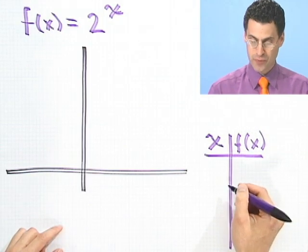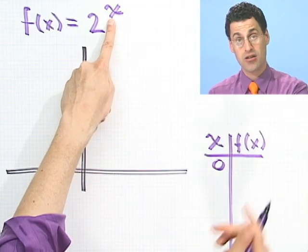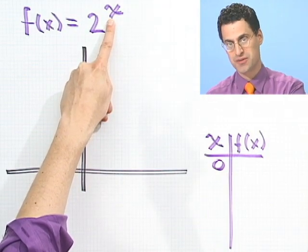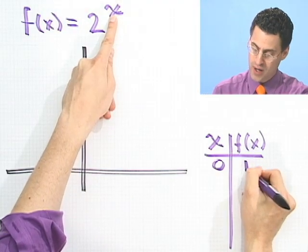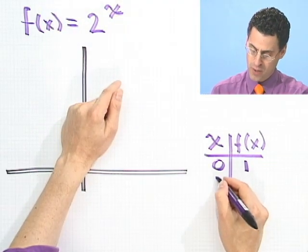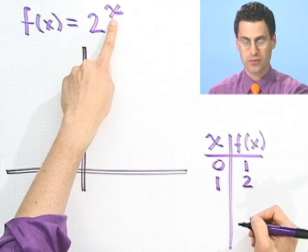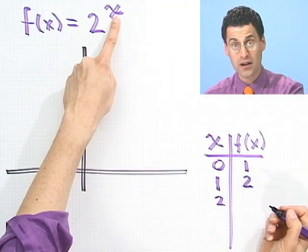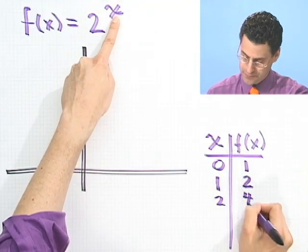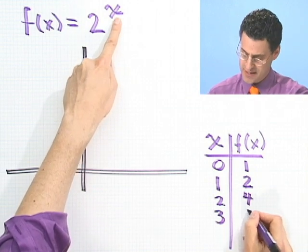Let's start off with 0. If I plug in 0 for x, these are exponent values so we have to be careful. This is now 2 raised to the 0 power, which equals 1. If I put a 1 in here, then 2 to the first is just 2. If I put a 2 in there, I see 2 squared, which would be 4. If I put a 3 in here, I'd see 2 cubed, which is 8.